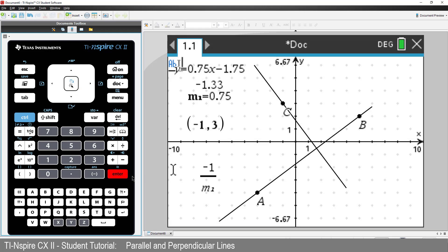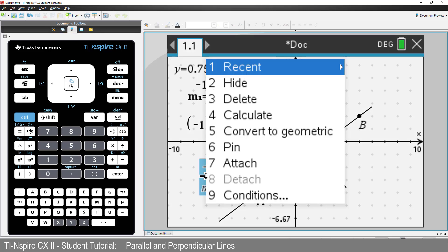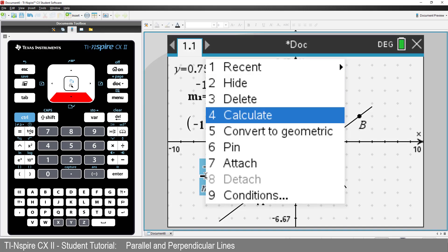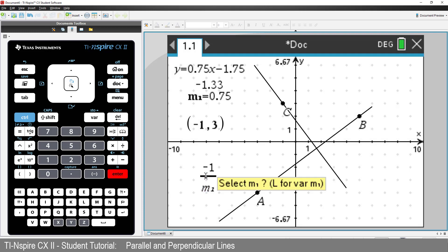To calculate the expression that we've just typed, press Control followed by Menu. Select Calculate. We could choose the value for M1. However, it's already been stored. So I'll press L to link the calculation to our stored value for M1.